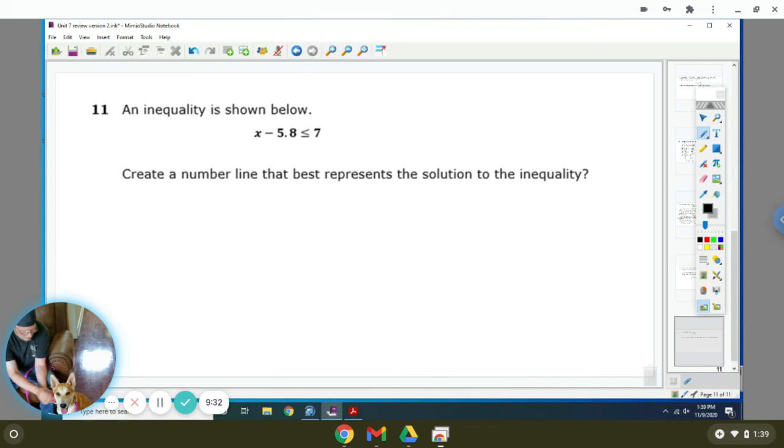In a quality shown below, you have X minus 5.8 is less than or equal to 7. So you're going to add 5.8 to both sides. And you get X is less than or equal to 12.8.